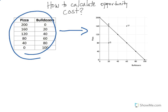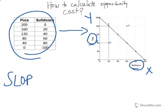You're going to take the information that's given here and plot it. We put pizza on the y-axis because it's a consumer item. We put our capital good on the x-axis because bulldozers are capital equipment. The simple way to calculate the opportunity cost is to take the slope, which is the change in Y over the change in X, and that gives us the slope.